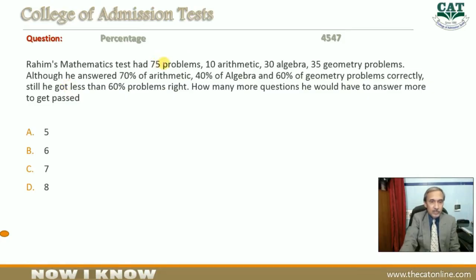Rahim's mathematics test had 75 total problems: 10 arithmetic questions, 30 algebra, and 35 geometry problems. Although he answered 70% of arithmetic, 40% of algebra, and 60% of geometry problems correctly, still he got less than 60% problems right. How many more questions would he have to answer more to get past?